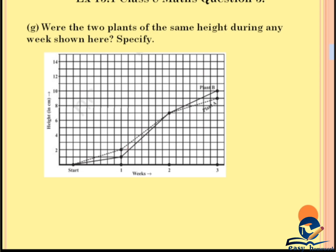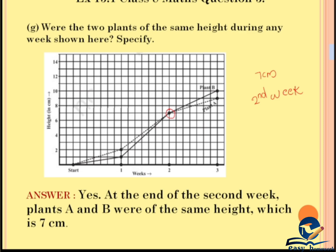Were the two plants of the same height during any week? Yes, at the end of the second week, Plants A and B were of the same height, which is 7 cm.